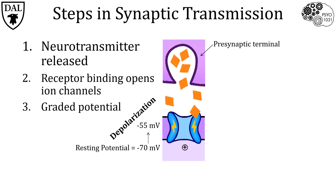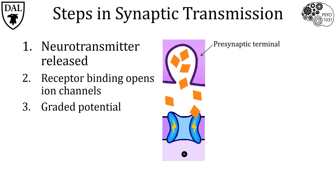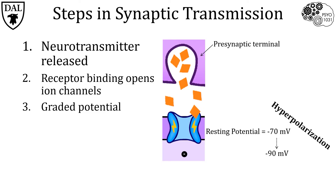If instead negative ions enter through the channel, then the inside of the neuron will become more negative — for example, the potential might decrease from its resting potential of minus 70 millivolts to minus 90 millivolts. This is referred to as a hyperpolarization and is considered inhibitory. Let's look at some examples of different types of receptors which produce either excitatory or inhibitory graded potentials.